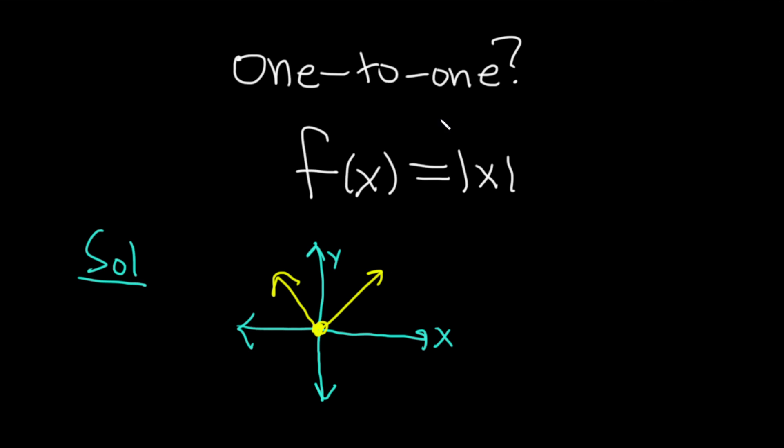If you wanted to find exact ordered pairs, it would be really easy to plug in numbers. For example, f of 0 equals 0, because the absolute value of 0 is 0. f of 1 is the absolute value of 1, which is 1. f of negative 1 is the absolute value of negative 1, which is also 1.